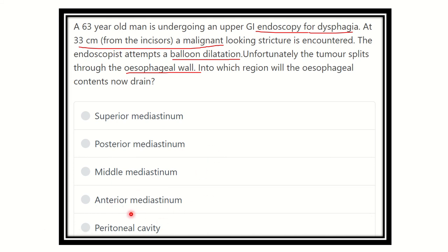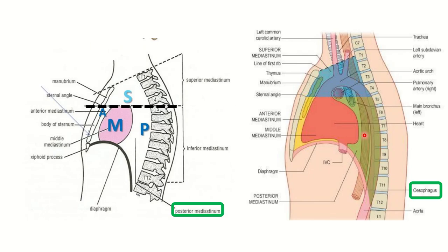First of all, we have to know where 30 to 33 centimeters from the incisor teeth lies. As we can see in this picture, this is the esophagus, and at 33 centimeters that means we are not in the abdomen — we are in this area here.